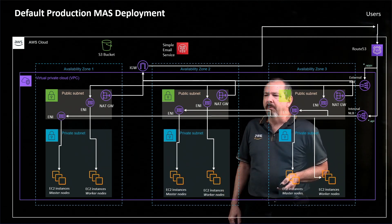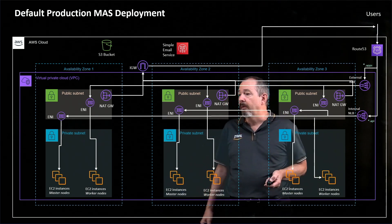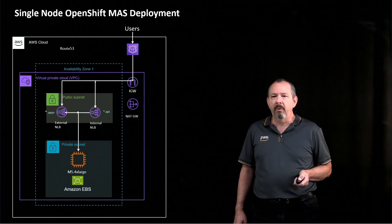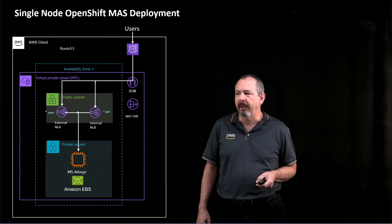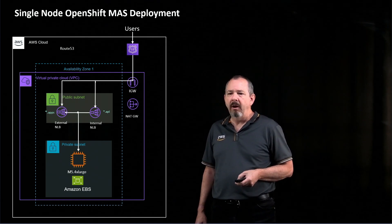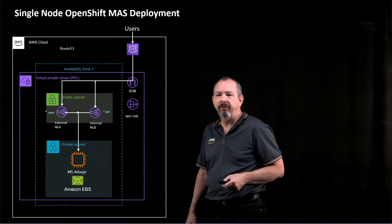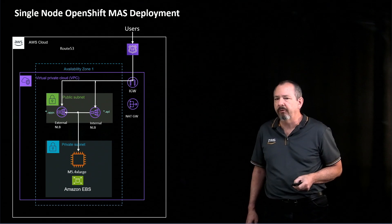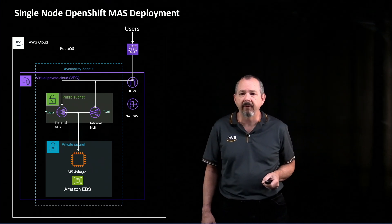You might want something smaller for a smaller business, or maybe for a demo or a proof of concept. Thanks to IBM, we also have a way of deploying Maximo 8 on single-node OpenShift, which is a way of deploying OpenShift from Red Hat on one single worker node, as you'll notice in this diagram, which will not only be running OpenShift, but also be running a small to medium-sized Maximo deployment on top of it.